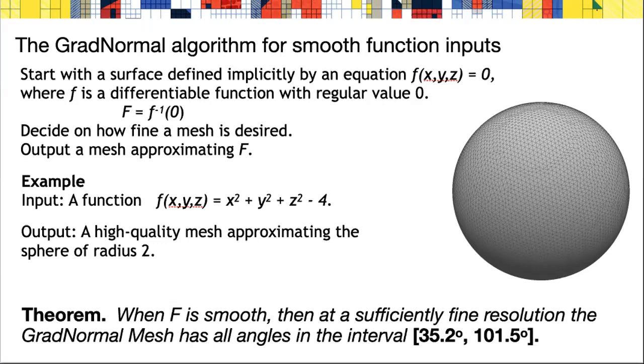The theorem I'll try and show you the proof of is that when f is a smooth surface, then at sufficiently fine resolution, all the triangles in this GradNormal mesh will have angles between 35.2 and 101.5 degrees.